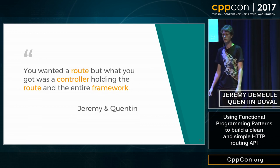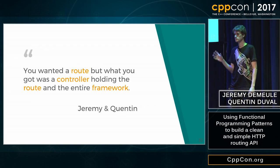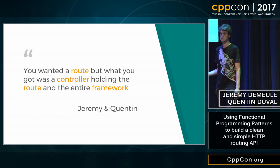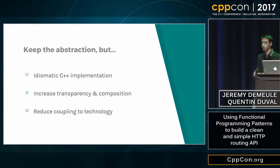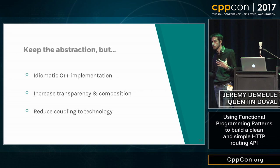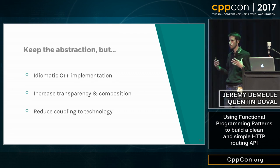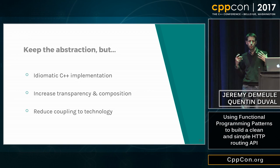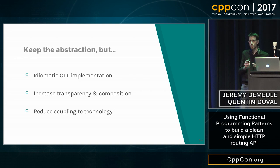We end up in a situation depicted by Joe Armstrong, the creator of Erlang, which describes wanting a banana but getting a gorilla that holds the banana, and the gorilla is so attached to the jungle that you get all the jungle. In our case, we just want a route, for instance to test it. The route is inside the controller, and needs the controller to do its stuff. The controller has annotations pointing to the framework. So we cannot test a route without the framework. To summarize: we want to keep the same level of abstraction to be scalable, but also want code that feels much more natural in C++. We also want to increase transparency and prefer composition to build higher-level concerns. And we want building blocks that are reusable without the whole framework.